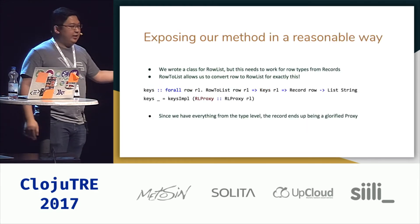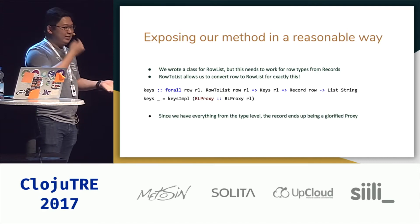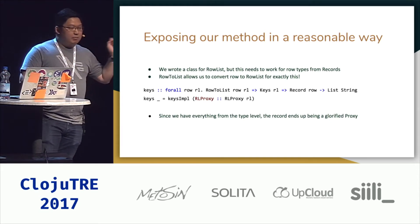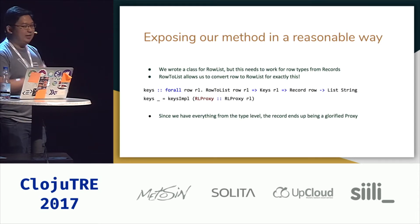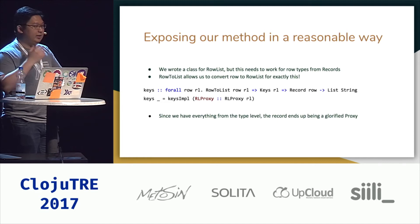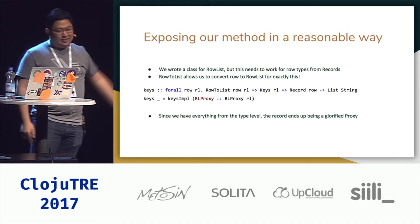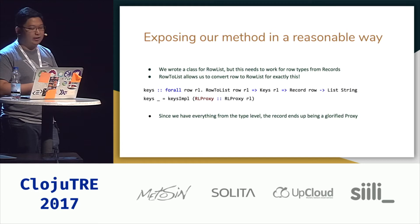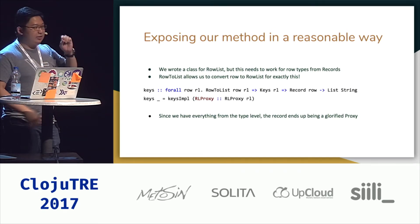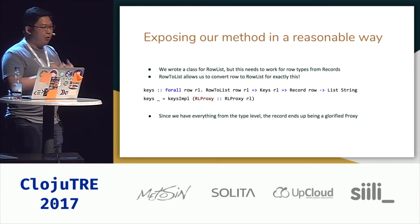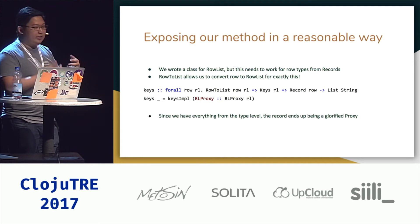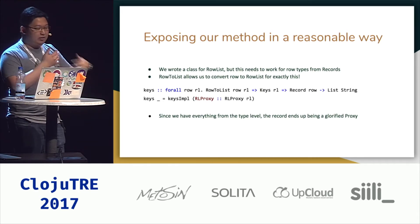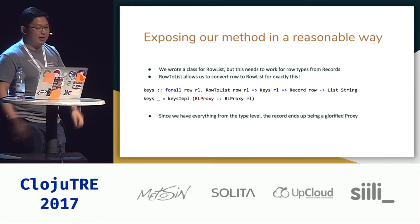If we want to work with this, you don't really want to require users to give you a row list proxy directly — that's just bad usability. Since we wrote this class for row list, we should wrap it in a more reasonable API. So I wrote a keys function where the user only needs to give me the actual record. Using the RowToList feature, I can convert that row into a row list, then use that row list with the constraint that it has the instance for my type class, and get the keys out of the record through the row list.